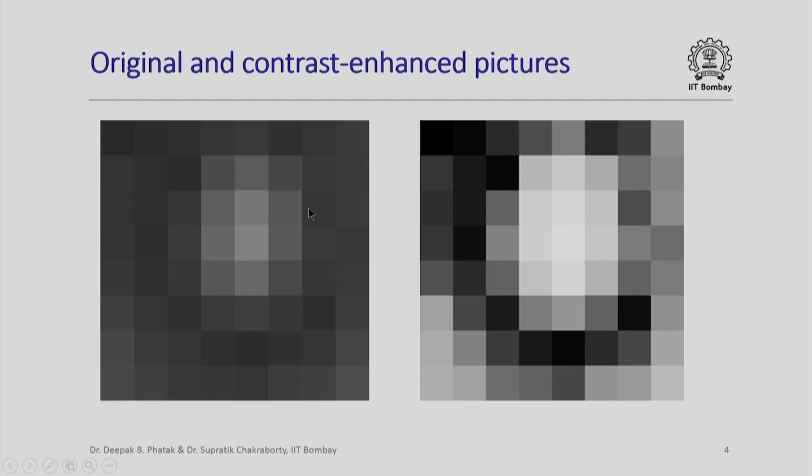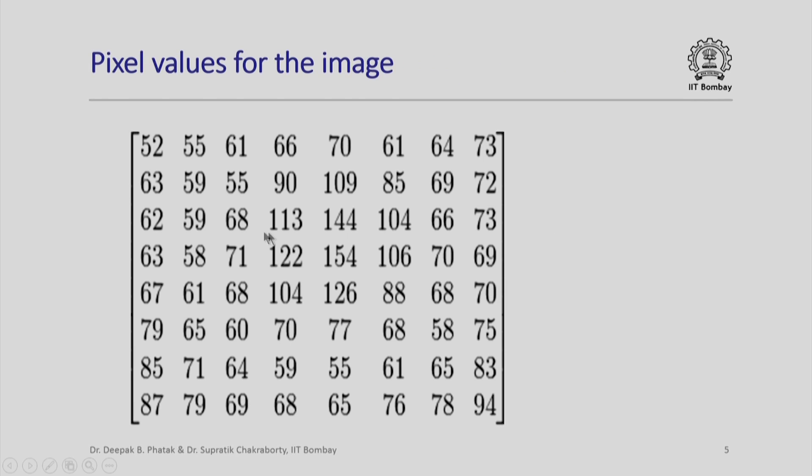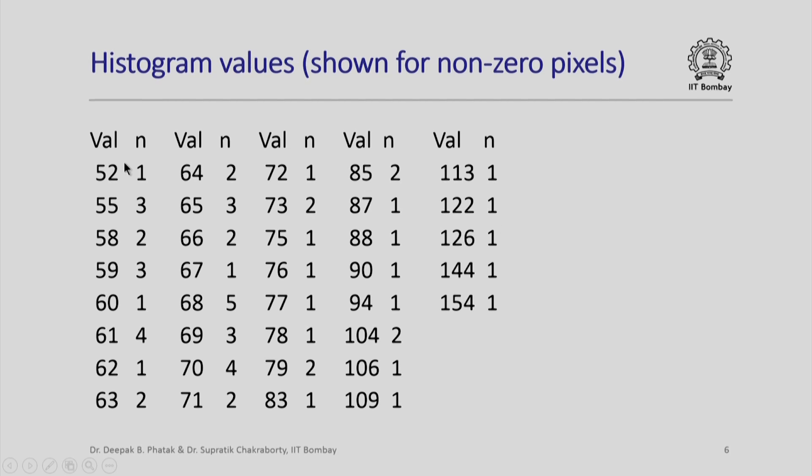We remember that we are doing this in the context of an artificial image which is an 8x8 image with specific pixel values. Using these we know that the histogram values will be of this kind. We had also seen the cumulative distribution function values and the formulae to be used for doing the contrast improvement.